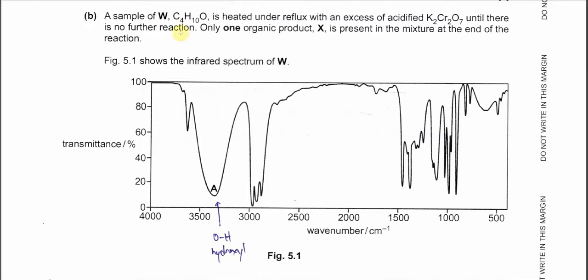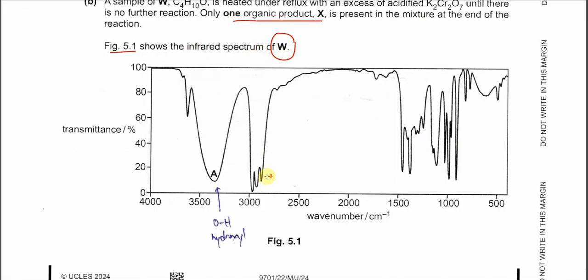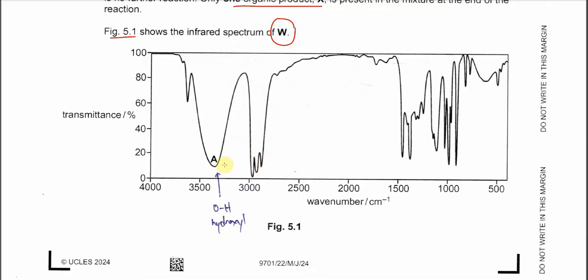Part B: A sample of W is heated under reflux with excess acidified potassium dichromate until no further reaction. Only one organic product X is present at the end of the reaction. Figure 5.1 shows the IR spectrum of W. From this IR spectrum, very clear that A, this one, is the OH group, hydroxyl group. Because it's around 3200, 300 something, and it's a broad absorption here. So we are quite sure this functional group is the hydroxyl group. Means W is actually an alcohol.